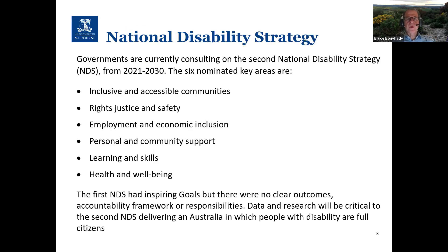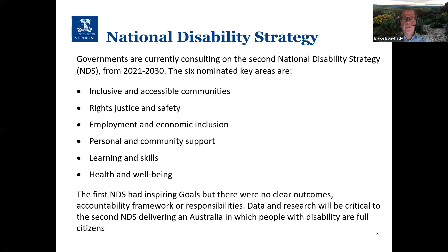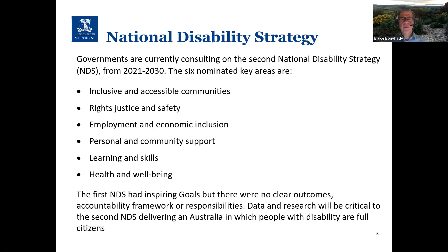The National Disability Strategy is really the big framework which governments are setting up to help ensure that people with disability are full citizens and are fully included in our society. There are six nominated areas for the strategy. The first is inclusive and accessible communities — making sure that housing and buildings are accessible, when we know that today many of those are not. The second is rights, justice and safety, ensuring that people with disability are free from violence, neglect or abuse, and that they have advocates who can help speak on their behalf.